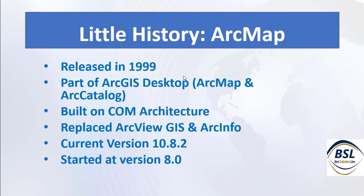Looking at the history of the two software — first, ArcMap. ArcMap was released in 1999 and is part of ArcGIS Desktop, along with Arc Catalog. It is built on COM architecture and replaced ArcView and ArcInfo. The current version is 10.8.2, starting from version 8.8.